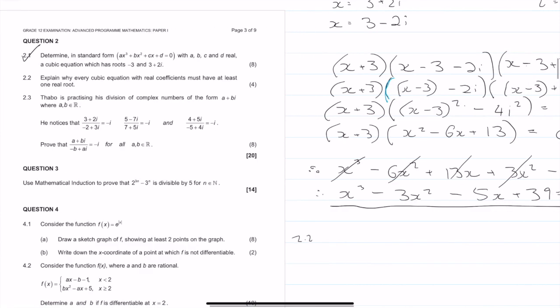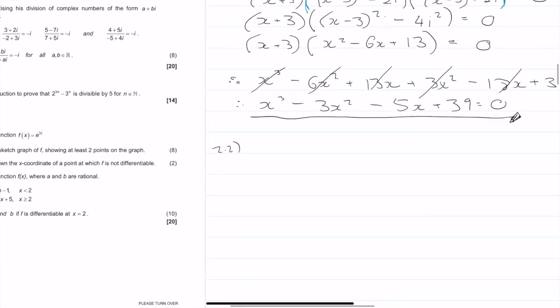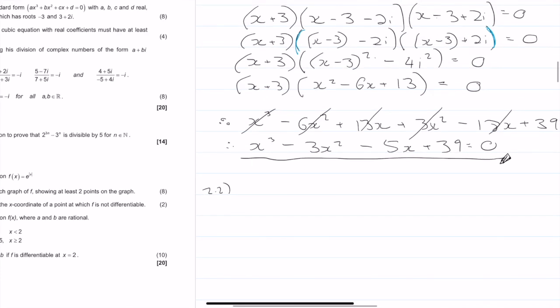Question 2.2 is a theory question. Explain why every cubic equation with real coefficients must have at least one real root. So remember a cubic — anything with x to the cubed — must have three roots. Complex roots of a polynomial with real coefficients occur in conjugate pairs, so imaginary solutions occur in pairs.